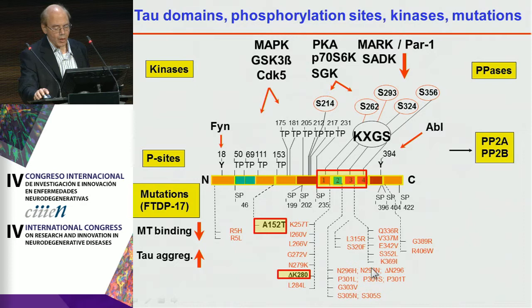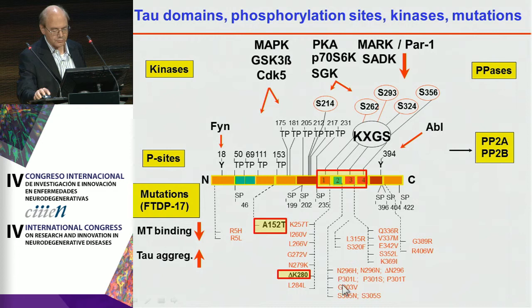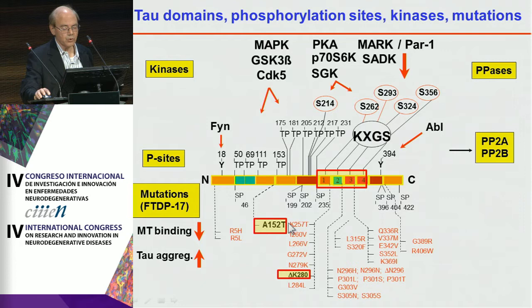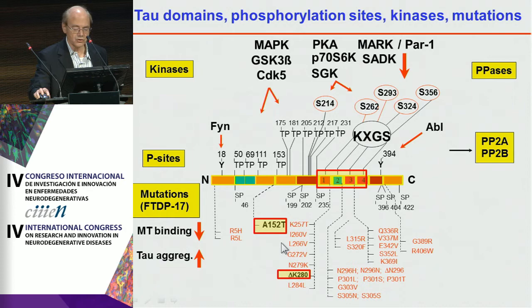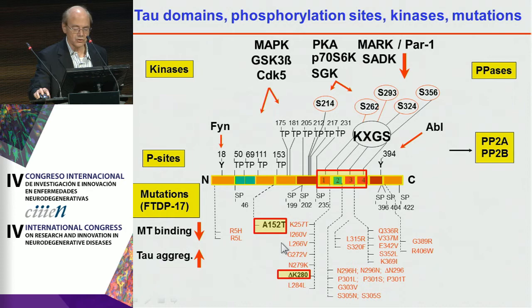Many of these mutations have been used to make cell and animal models of tauopathy. In our lab, we focused on the mutation ΔK280, located near the repeat domain, which explains why it affects aggregation. More recently we looked at the A152T mutation, which is different from most others because it is a risk factor for PSP and related diseases, but is located far outside the repeat domain and therefore not immediately related to assembly — and it shows a different kind of toxicity in mouse models.